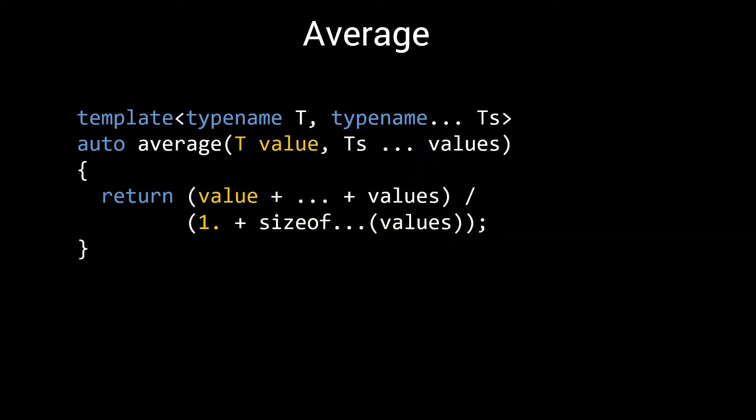Note that I made the decision to require at least one value in the function signature. After all, computing the average of zero values is ill-defined. By including this requirement in the function signature, the user immediately knows to supply at least one parameter, without even having to look at the implementation of the function.